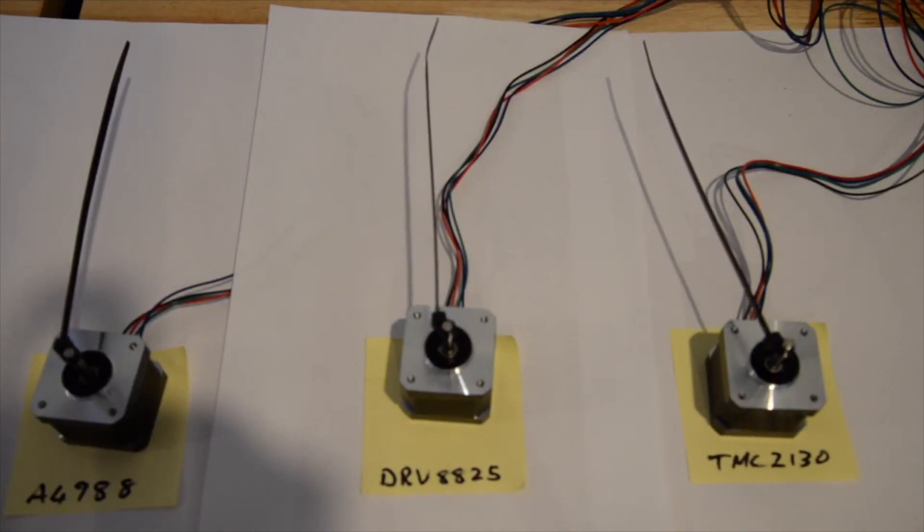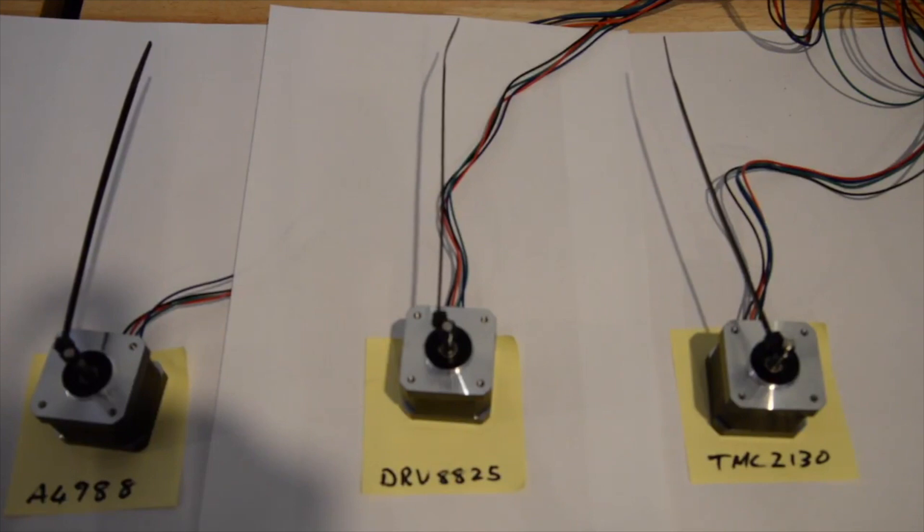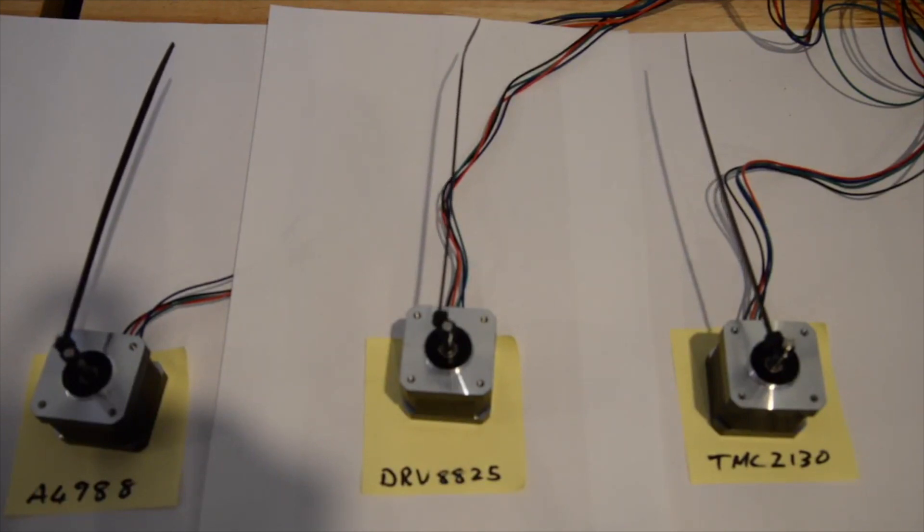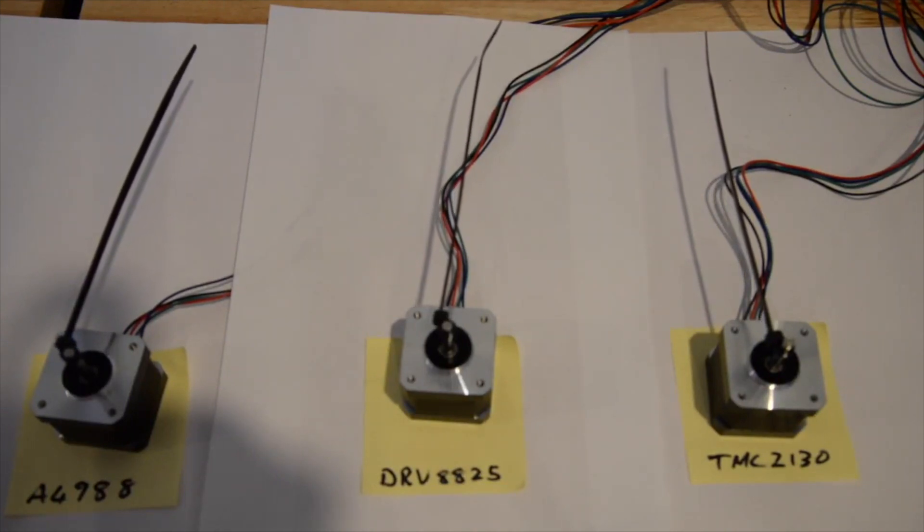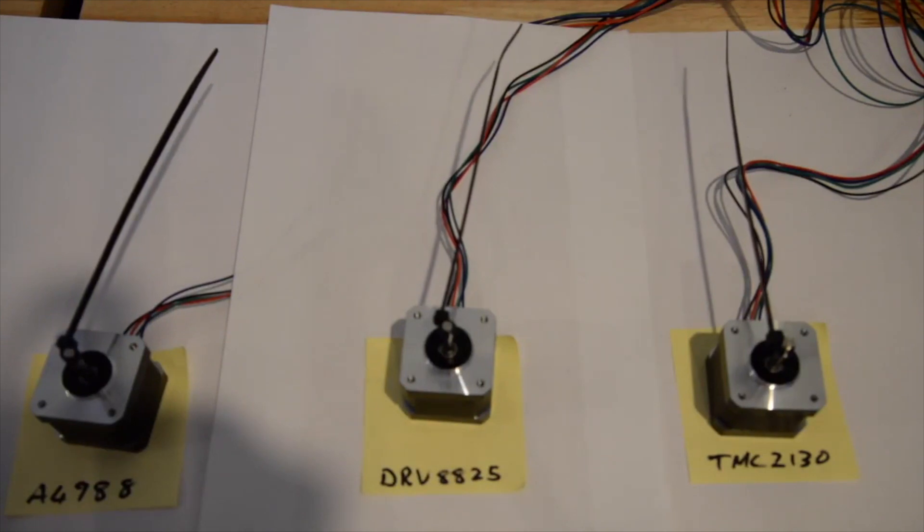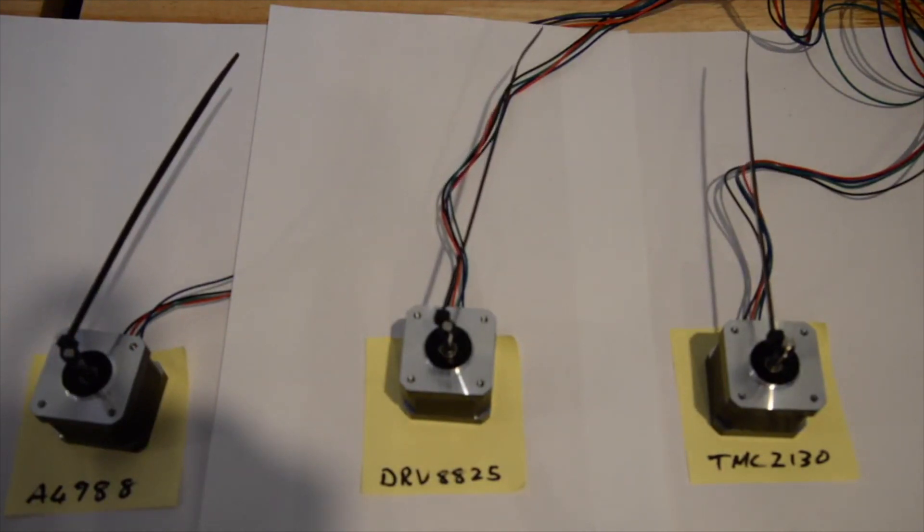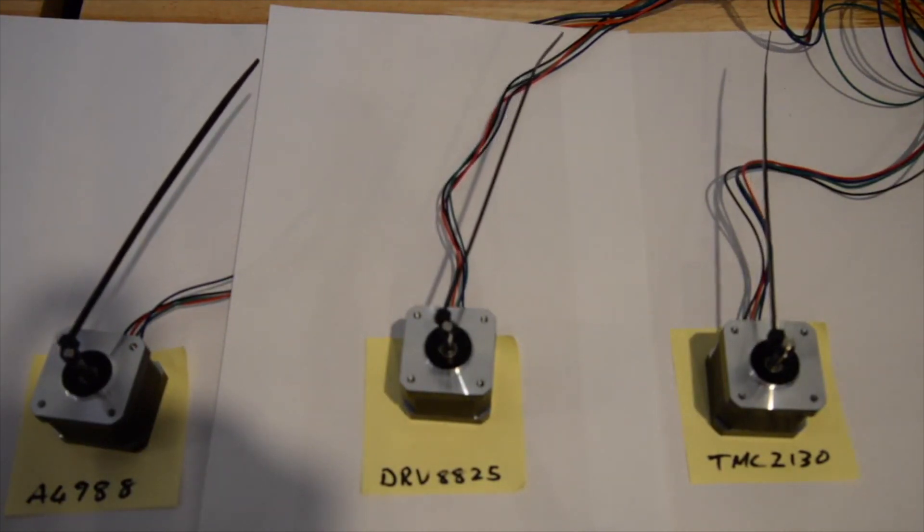We saw that the A4988 was performing pretty smoothly and the newer DRV8825 was skipping steps at slow speed, and the newest TMC2130 was being super smooth.